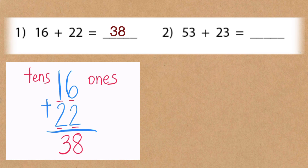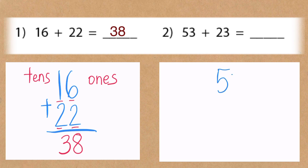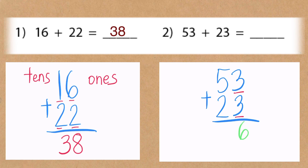Now let's solve the next problem: 53 plus 23. Vertically, we write it this way — 53 plus 23 is equal to blank. Ones place: three plus three gives you six. Next, tens place: five plus two gives you seven. The final answer is 76.